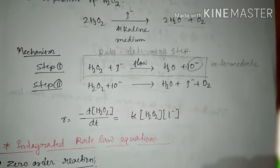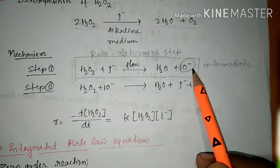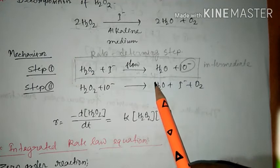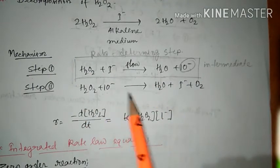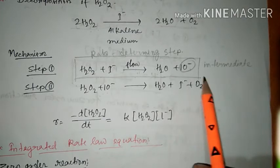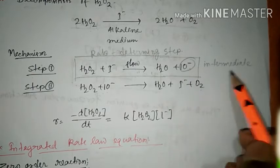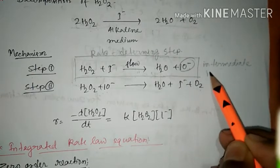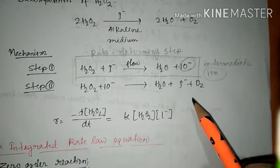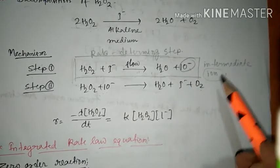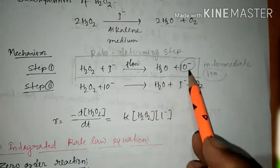The second remarkable property: if you look closely, the I- ion is formed between these two steps — here it is formed, and here it vanishes, meaning it reacted to form I- again and O2. That's why this OI- ion is called the intermediate. Intermediate means it forms in one step and is consumed in the next.